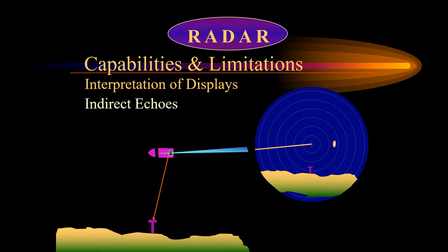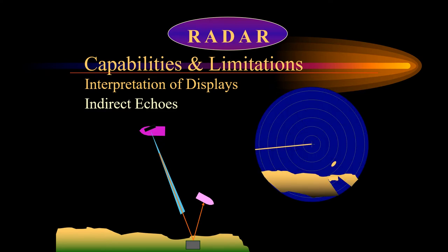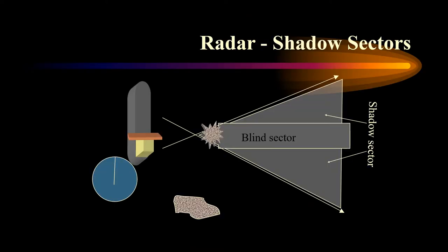Upon installation of the radar it is very important that the shadow sectors and blind arcs be identified so that operators are aware of the limitations of the radar in these areas. The indirect false echo is caused by the obstruction which in turn creates the shadow sector. The shadow sector starts acting as a mirror to bounce the radar beam both out and back. The indirect echo will appear in the area of the shadow sector or blind arc and will be roughly the correct range but at an incorrect bearing.